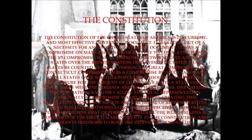The Constitution of the United States of America is its current and most effective governing document. It was born out of a necessity for an effective governing document and was a compromise on many fronts, from slavery to legislative power. The Three-Fifths Compromise was a compromise between slave and free states over the representation of slaves, dictating that slaves be counted as three-fifths of a person. The Great Compromise, or Connecticut Compromise, was a compromise between large and small states over whether population should be the measure for legislative seats. There were the Virginia and New Jersey plans — one calling for population-based representation and one calling for equal representation. Eventually, a compromise was reached by creating two legislative bodies, the Senate and the House of Representatives, based on equality and population respectively.